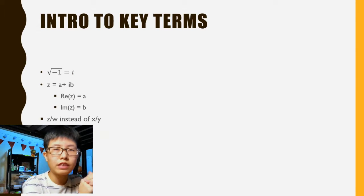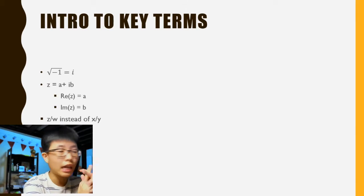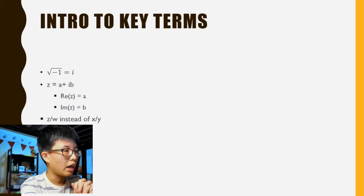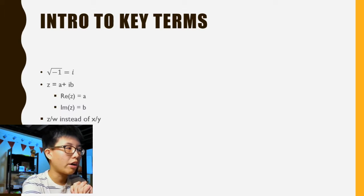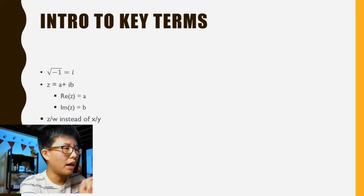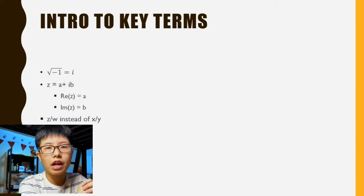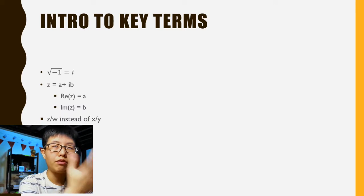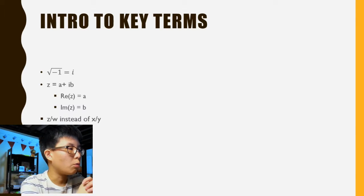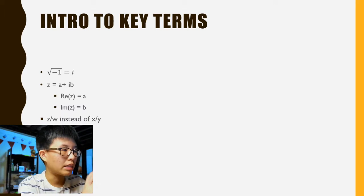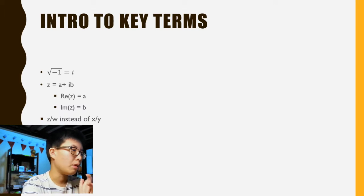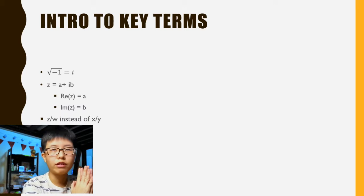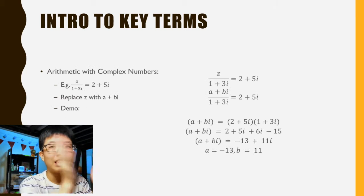Complex numbers - the first thing you need to know is this thing called an imaginary number, and that is i. The definition of i is the square root of negative one. When we're talking about complex numbers, we always break them down into a real part and an imaginary part. The real part is just any real number, and the imaginary part is any real number but you put an i in front of it. When you put it together, we call it a complex number z. With real numbers we use x and y; with complex numbers we use z and w.